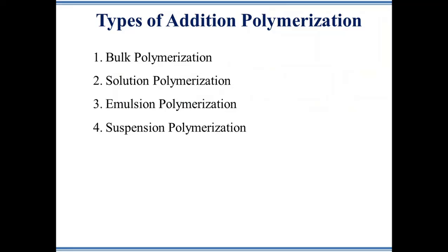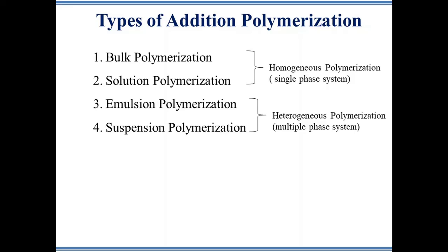There are four types of addition polymerization: bulk polymerization, solution polymerization, emulsion polymerization, and suspension polymerization. Bulk and solution polymerization fall under the category of homogeneous polymerization, while emulsion and suspension polymerization are known as heterogeneous polymerization.